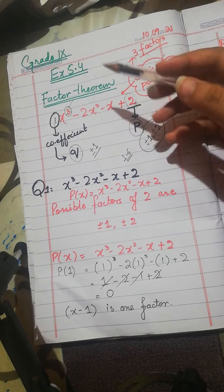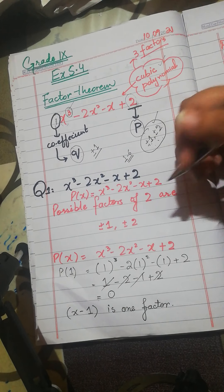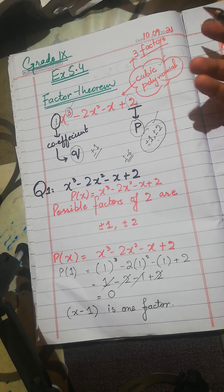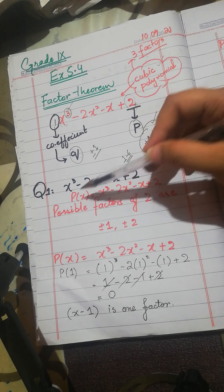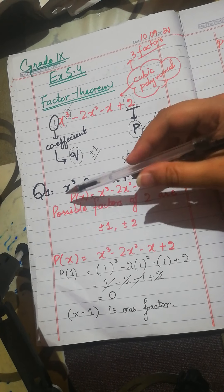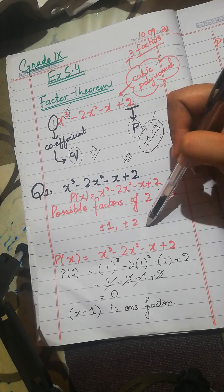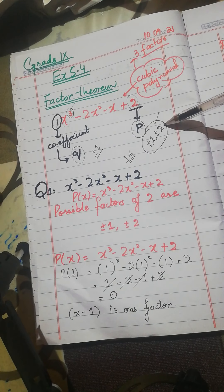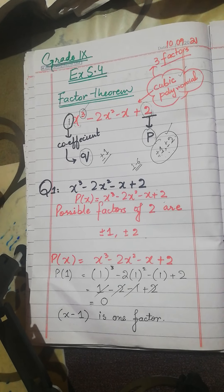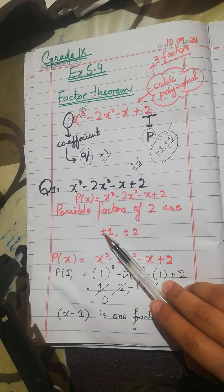We have to test these 3 factors. We will verify that the remainder will be 0. We will say that this is a factor. Let's see. P is equal to this. The possible factors of 2 are this and this. I have to tell you how to find out.